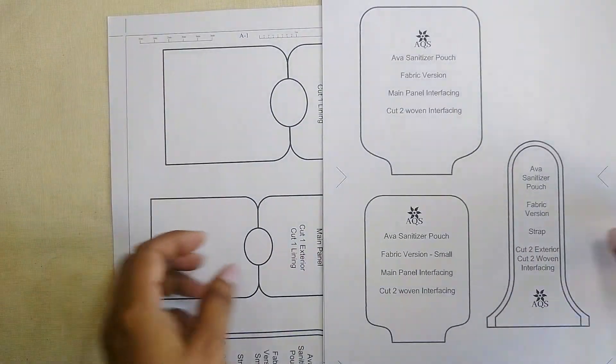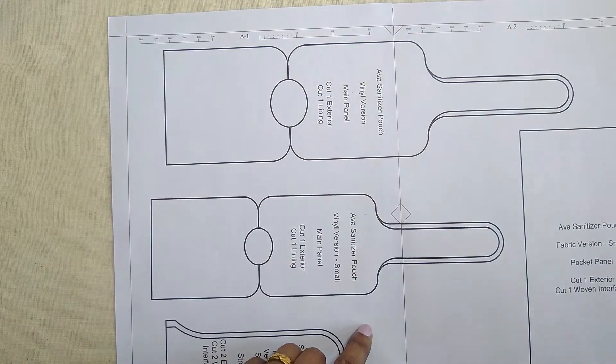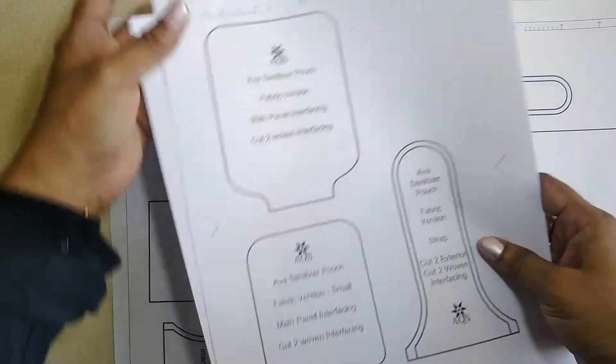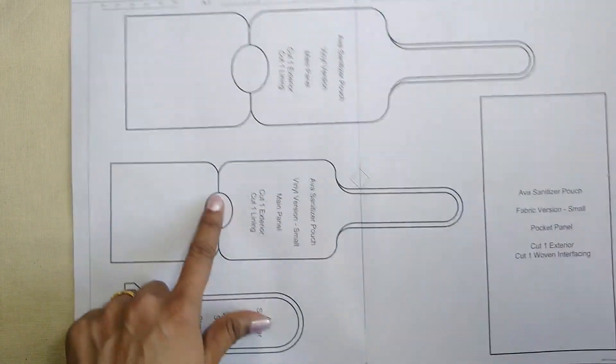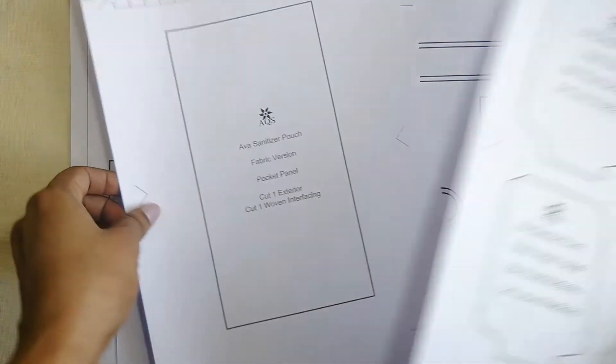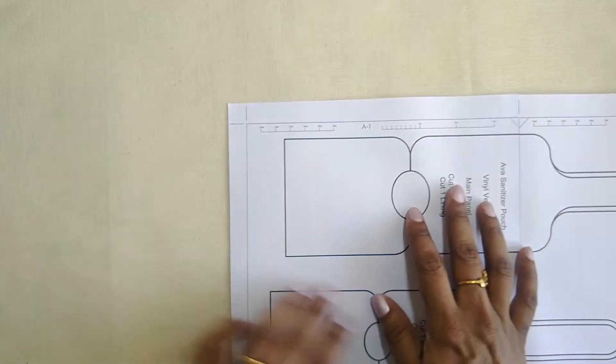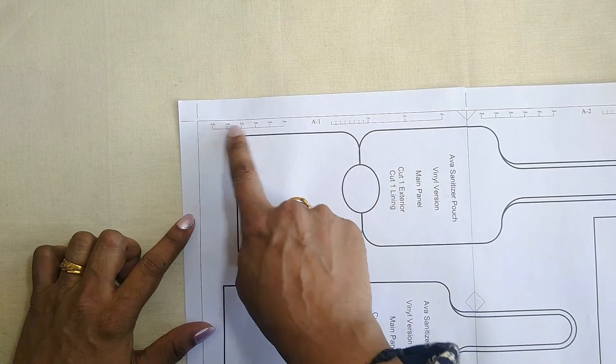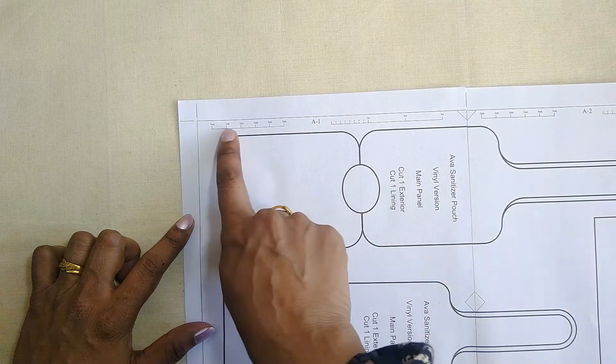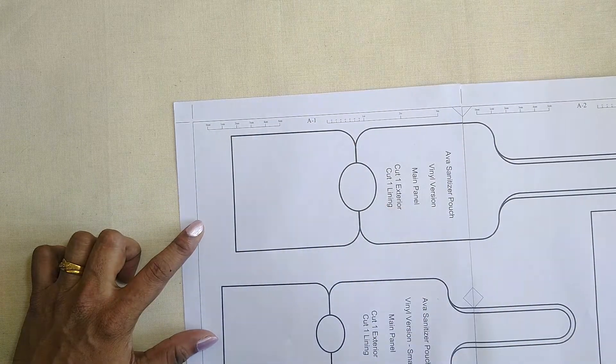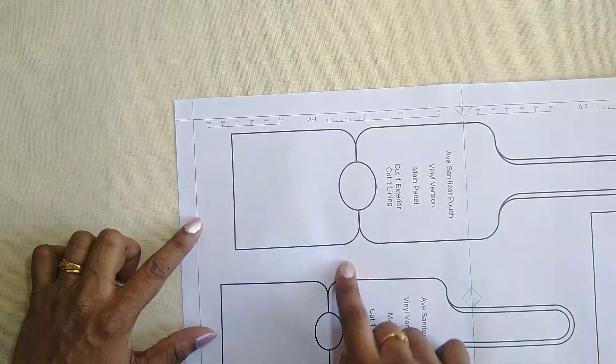Pattern pieces have been provided at the end of the document for both the vinyl and fabric versions and for both sizes. There are about five pages to print out. At the top of the page you'll find an accuracy guide which comes in centimeters and inches, so just measure to check if the pattern has been printed properly.